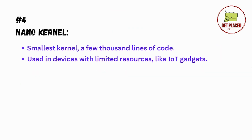Moving ahead, we have nano kernels. Nano kernels are super tiny systems with just a very few thousands of lines of code. They are used in small devices like embedded systems and IoT gadgets that don't have a lot of space. The operating system is like a small toy for them — examples include IoT devices, house appliances like ovens and washing machines.